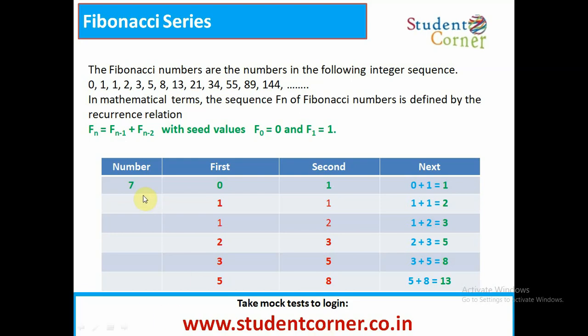Here, if we take n equals 7, then we need to print the value. First value is 0 and the second value is 1 and the next series will start with 0 plus 1 equals 1. Next the values are exchanged to first value equals 1. This second value is assigned to first value and the new value is assigned to second and again we need to sum it. We will get the new result. It is the process of Fibonacci series.